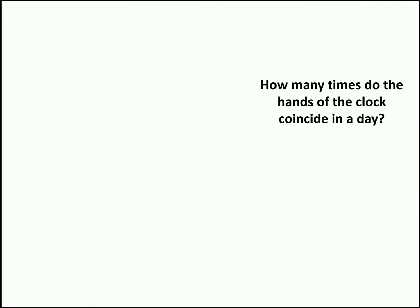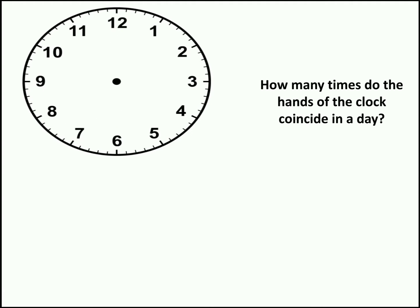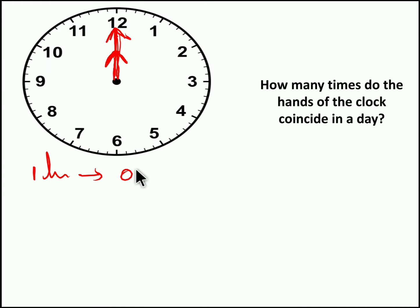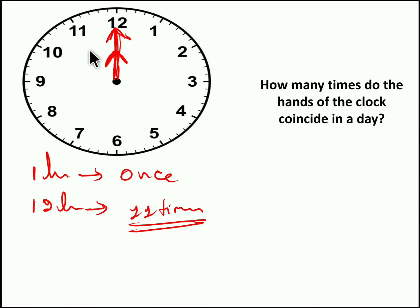Moving to the second model: how many times do the hands of the clock coincide in a day? In a day we have 24 hours. Clock coinciding means both needles make 0 degrees. We know exactly at 12 o'clock both needles coincide. Now, we know both needles coincide once for every 1 hour, but in 12 hours it will coincide only 11 times — because between 11 o'clock and 1 o'clock, it will coincide exactly once at 12 o'clock.